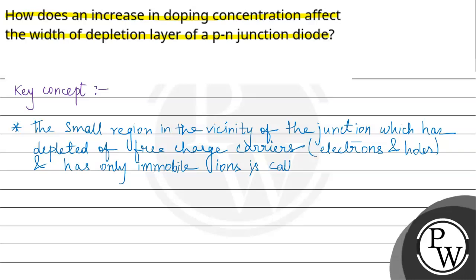It is called the depletion region. In a PN junction diode, it will look like this.